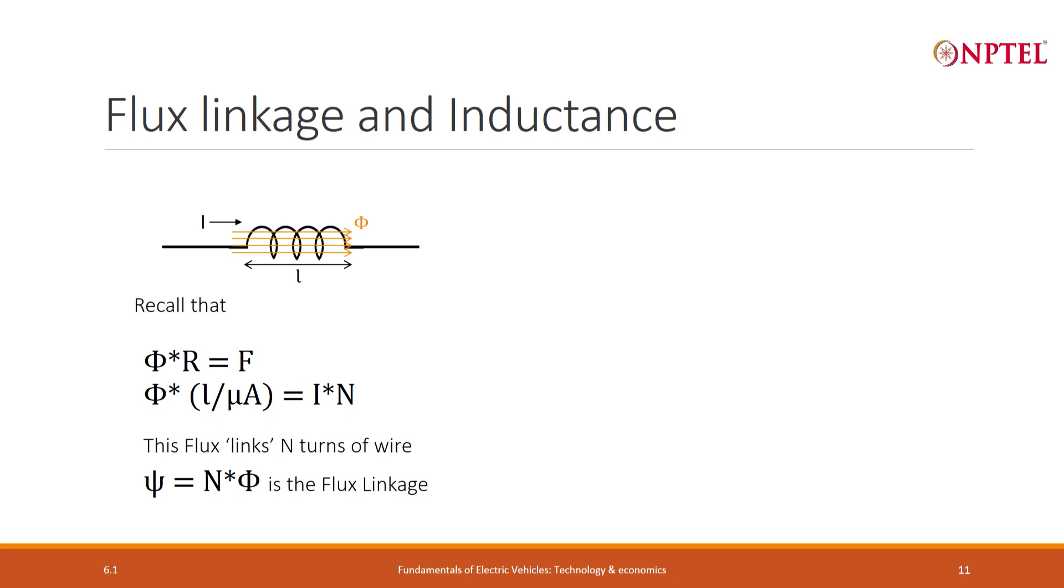If a flux phi is flowing through the coil with N turns, the flux linkage is phi multiplied by N, and we denote that by the symbol psi. But we already know that phi into reluctance is the magnetomotive force. So if I extend this, substitute for phi by putting psi, then what I get is N square, and what I have on the right hand side is the reciprocal of the reluctance.